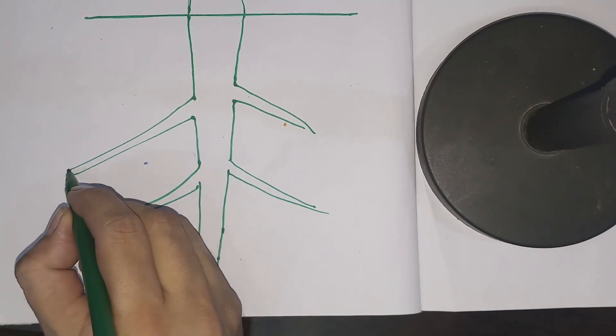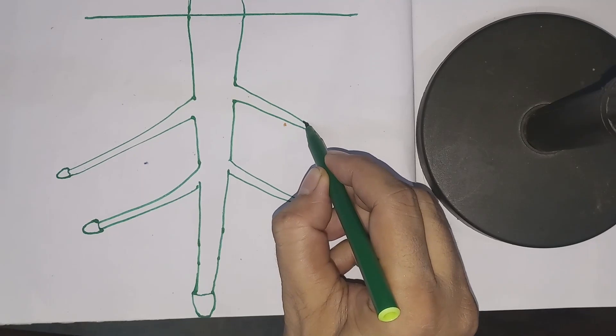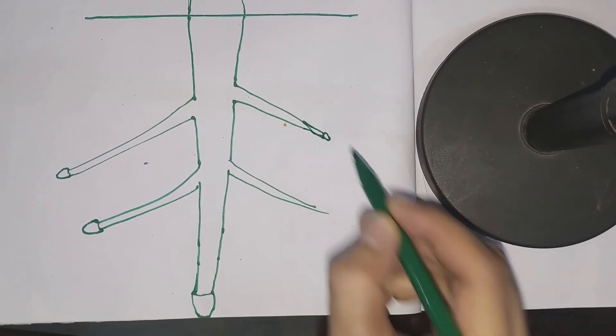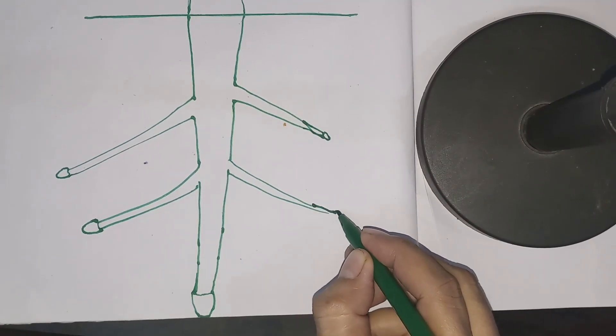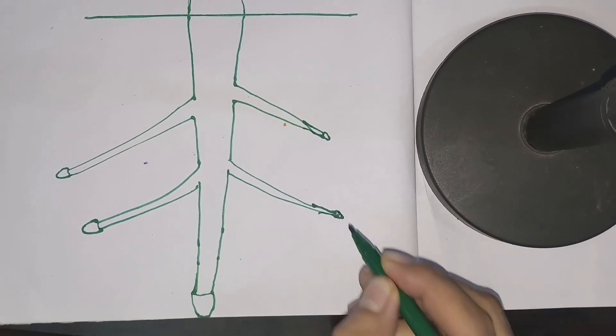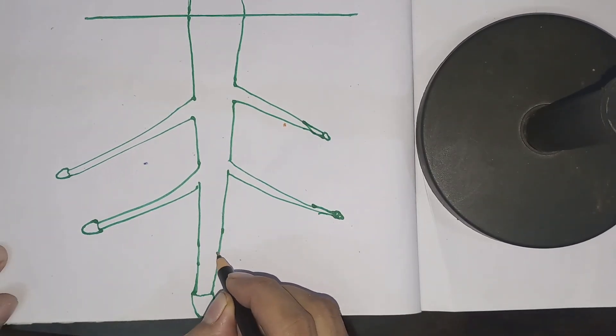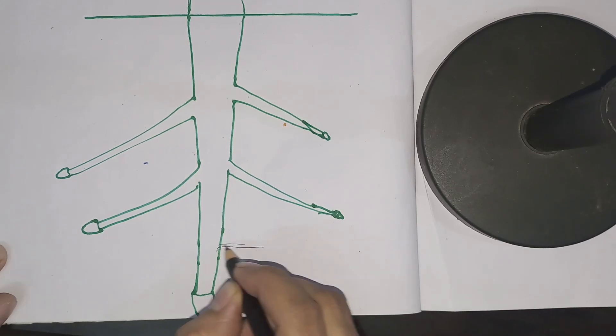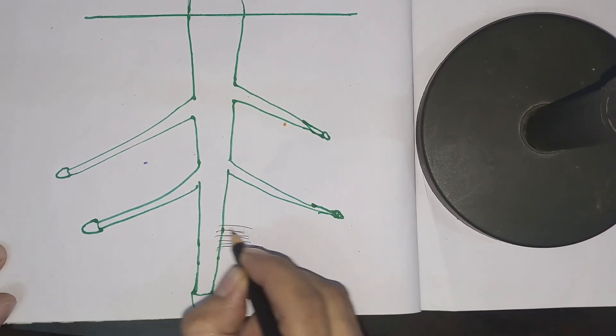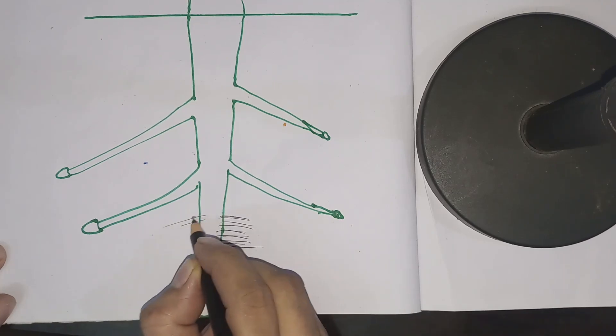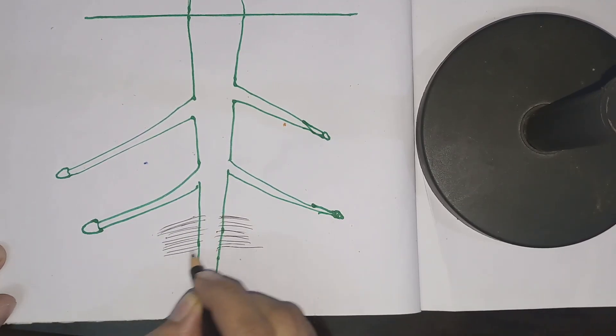This cap-like structure protects the root tip. As the root grows underground beneath the soil, it may hit hard objects. To prevent the tip of the root from breaking, this cap-like structure is there. Just above the cap-like structure, which is known as the root cap.